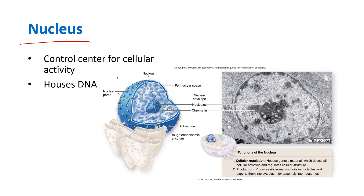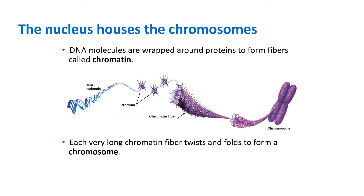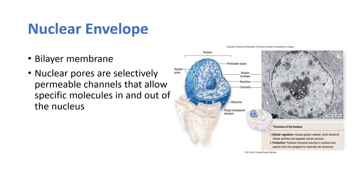Another common organelle found in all eukaryotes is the nucleus. We refer to it as the control center because this is where the DNA resides. Human DNA is linear and about six feet long, so to fit into the nucleus it coils itself around proteins — we call this chromatin. When chromatin coils even more, we call it a chromosome. The nucleus is covered by an envelope that has pores to allow the passage of substances into and out of the nucleus.